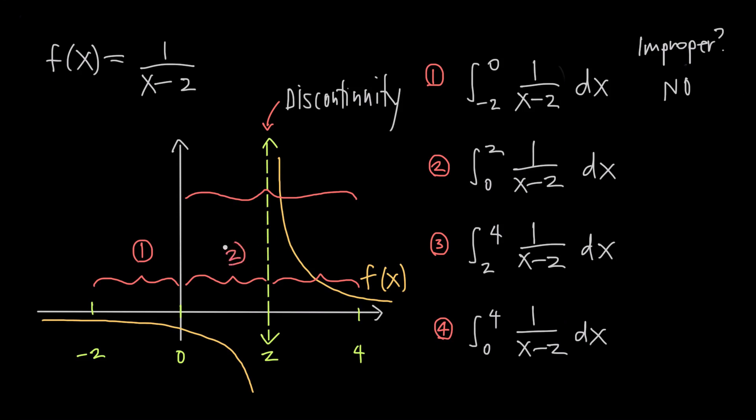If we integrate on 0 to 2, then the integral is improper because there's a discontinuity at the right edge of the interval.